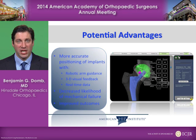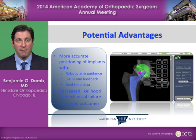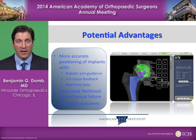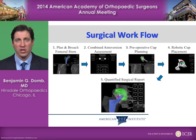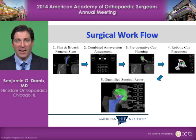More accurate positioning of implants with robotic guidance, 3D visual feedback, and real-time data may lead to a decreased likelihood of mechanical failure and improved outcomes. The surgical workflow begins with planning and broaching the femoral stem, combined anteversion assessment, pre-operative cup planning, and robotic cup placement.